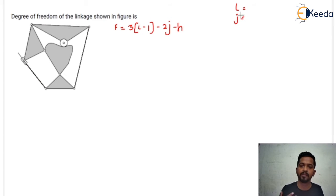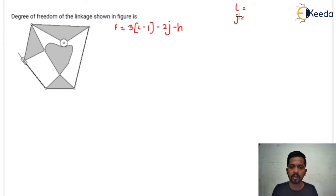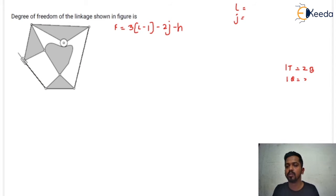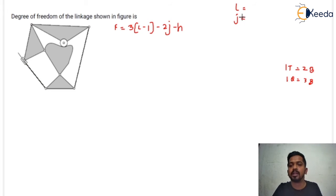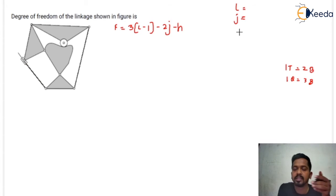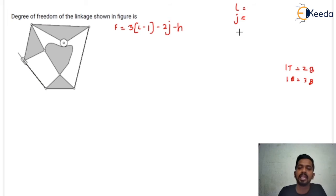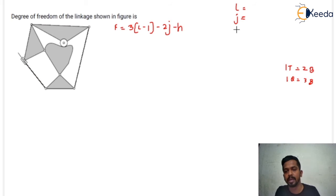Number of joints means: if there is a ternary joint and a quaternary joint, you have to convert them into binary joints. One ternary is equal to two binary, and one quaternary is equal to three binary. All the joints that you are summing should be binary joints. J is also known as the number of lower pairs — lower pair means if there is any surface or area contact. And H represents the number of higher pairs.